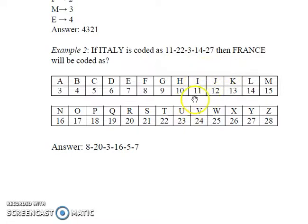The code word for ITALY follows the same pattern. I has been coded as 11, T as 22, A as 3, L as 14, Y as 27, and therefore FRANCE will be coded as this sequence here.